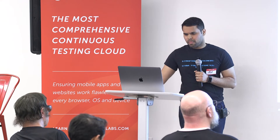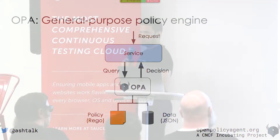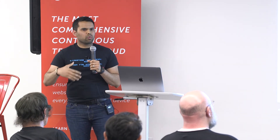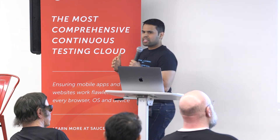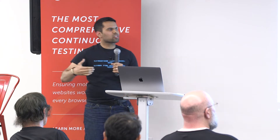Imagine you have a service — it can be your Kubernetes API server, your own custom service, an API gateway, anything. Whenever your service gets a request, it will ask OPA whether the request is allowed by executing a query. That query can contain the request method, the request path, the user making the request — basically any JSON value. OPA evaluates this query based on the policy and data it has access to, creates a decision, and returns it back to your service where it gets enforced. That decision can be a boolean like allow or deny, true or false, or any other JSON value.